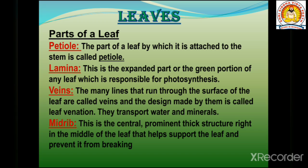Photosynthesis is the process in which plants make their own food. The expanded part is called the lamina. There are many lines that run through the surface of leaves called veins, and the design made by them is called leaf venation. Veins transport water and minerals.